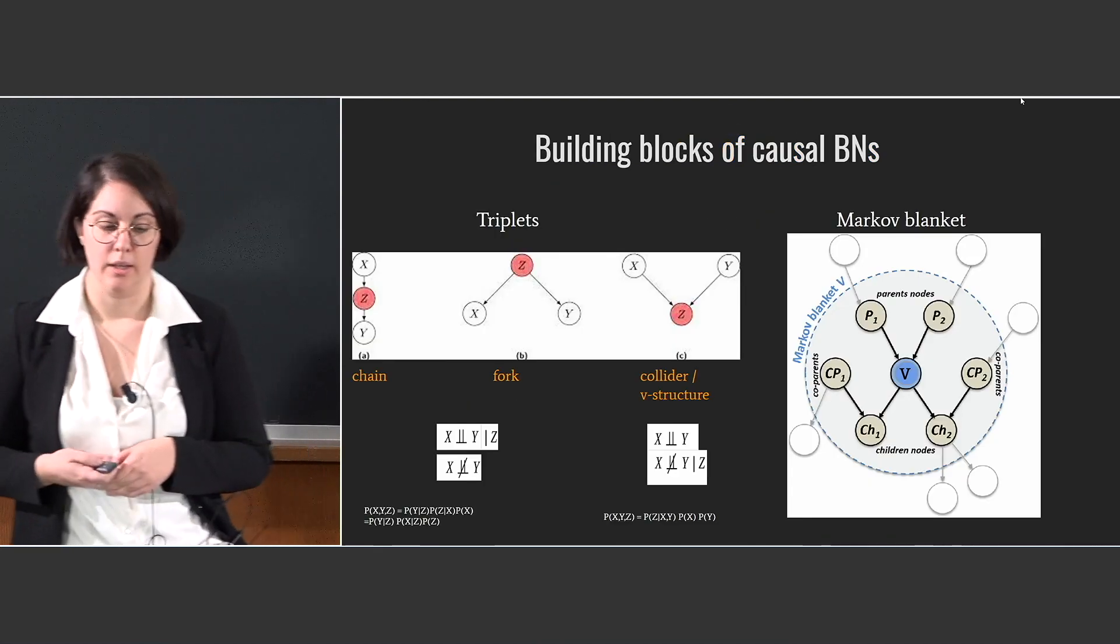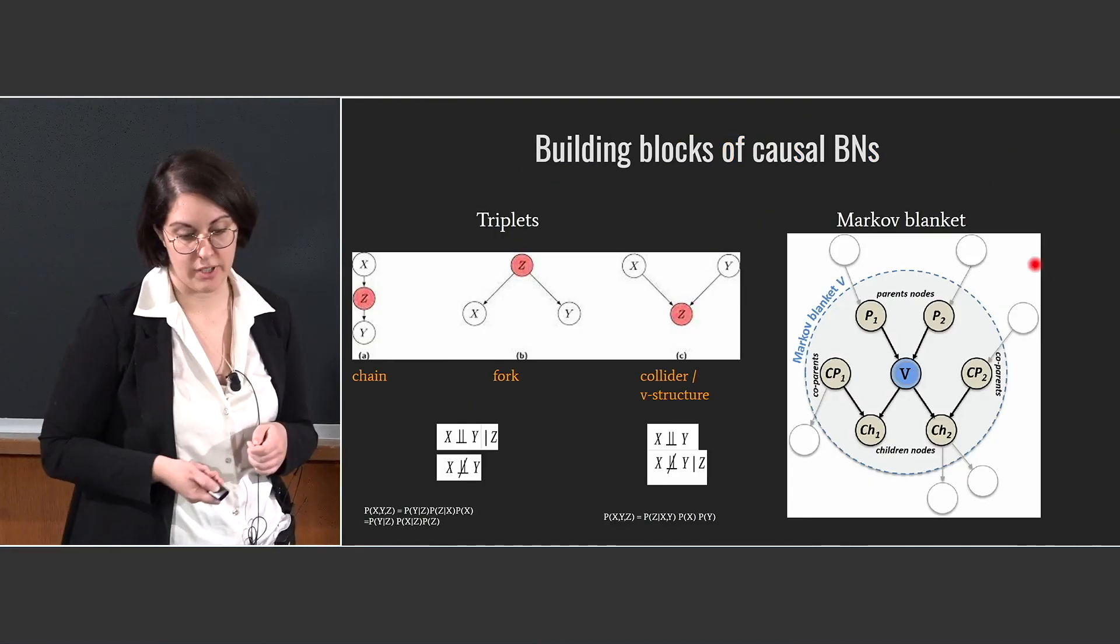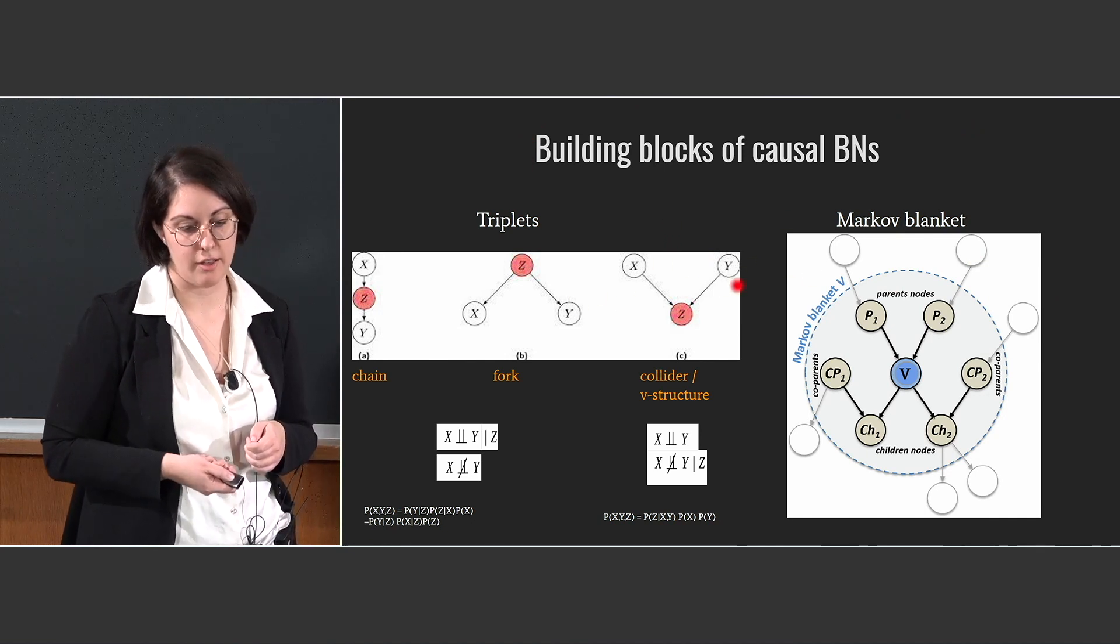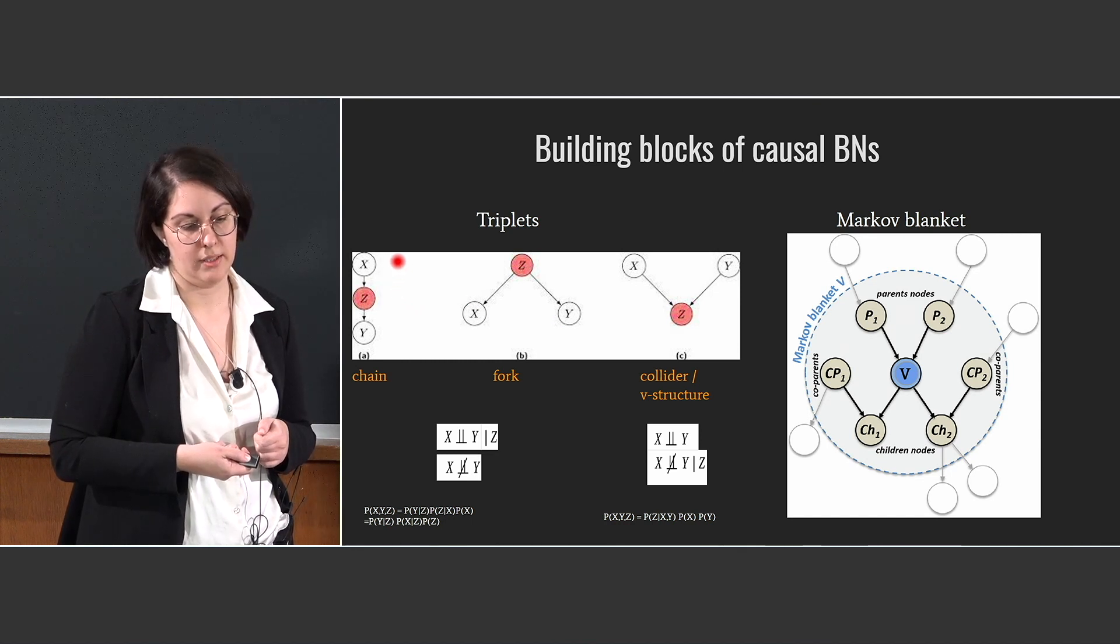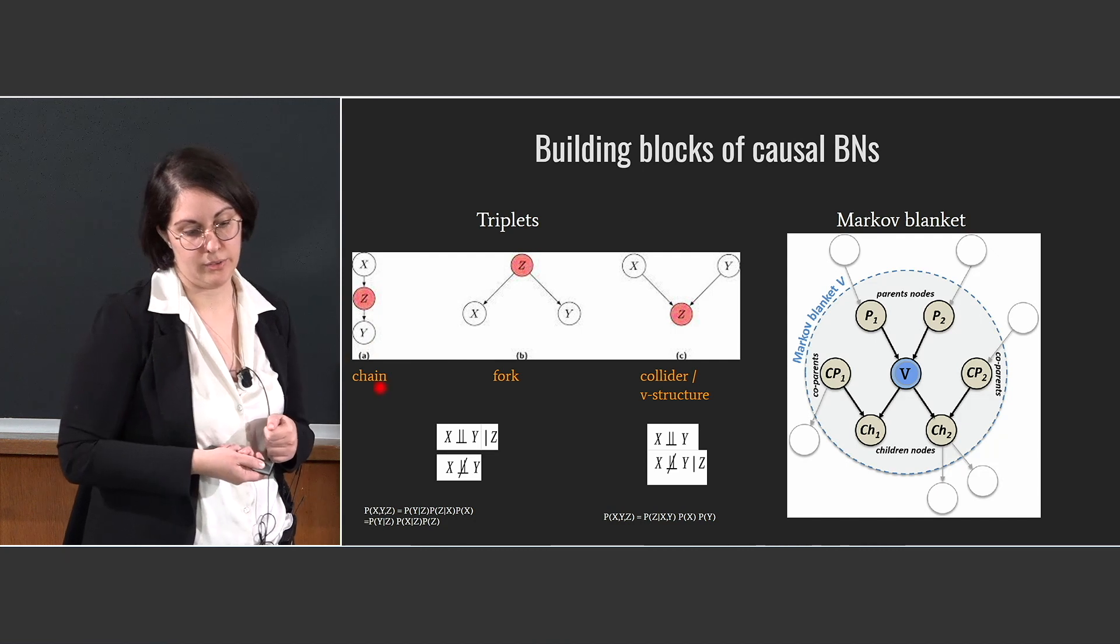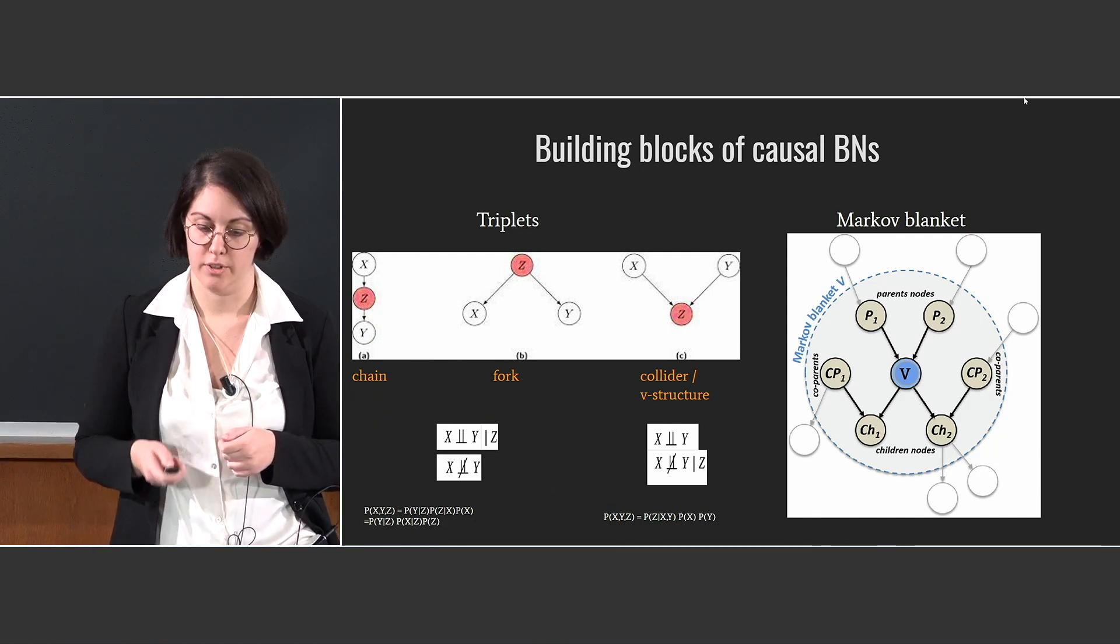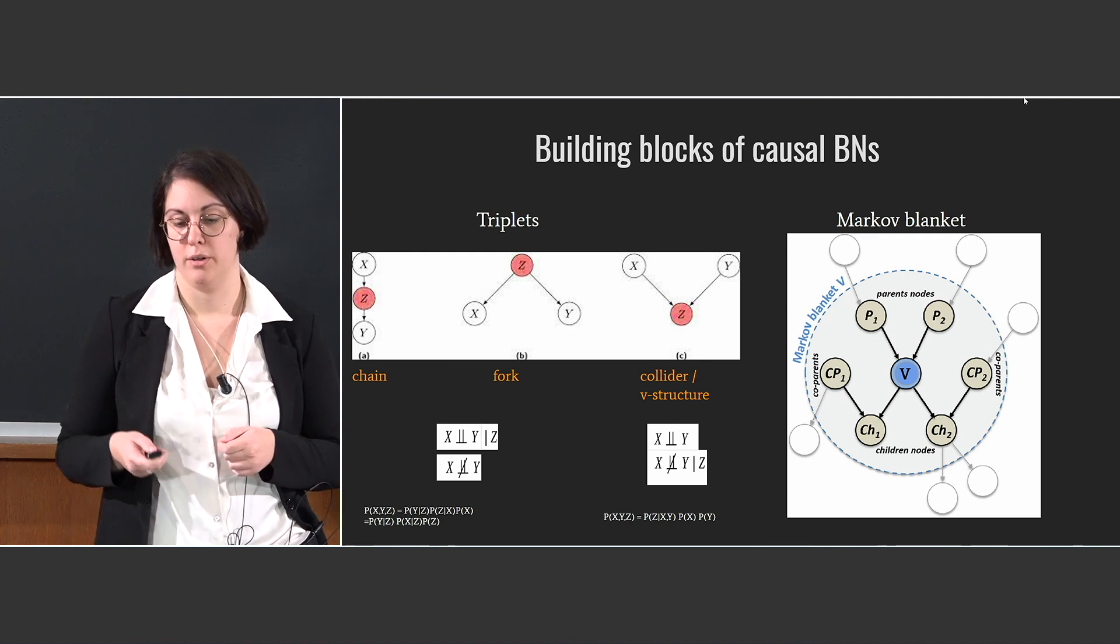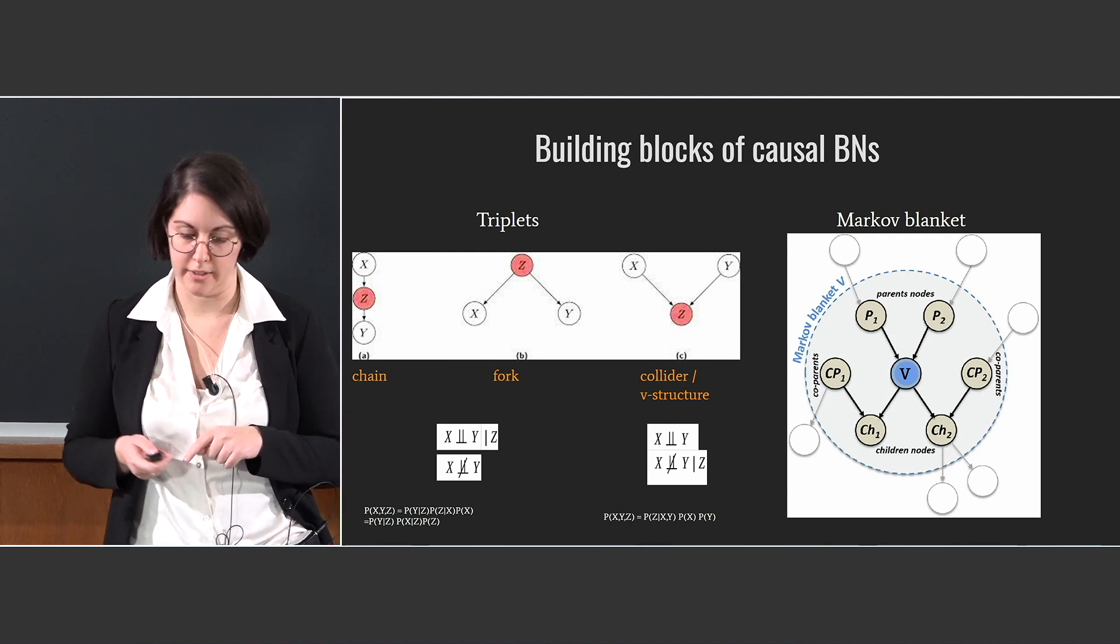We can define three building blocks of causal networks that are a chain, a fork, and a collider from left to right, where we see that x causes zeta, and zeta causes y variable, and instead we have a common cause of x and y, or we have a common child of x and y in the collider case.